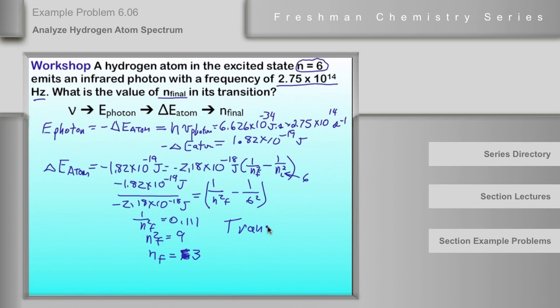And so the transition, n is equal to 6 to n is equal to 3.